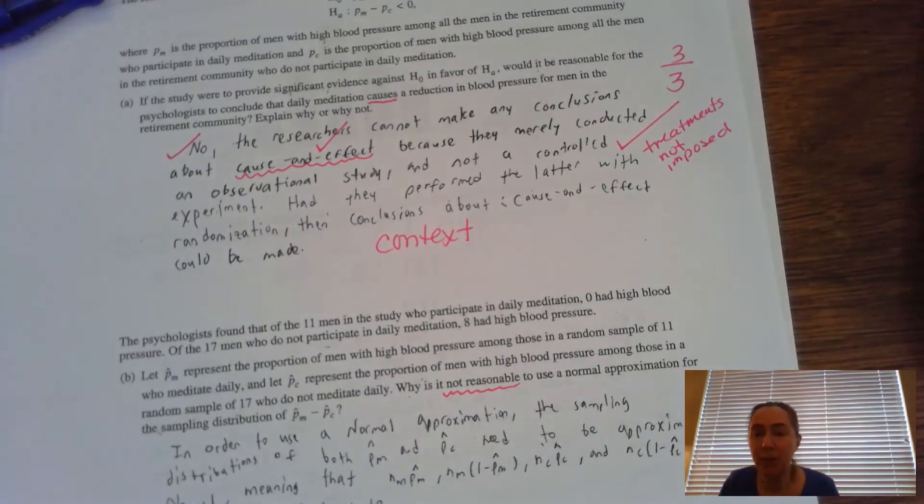Now, remember to use a normal model. You need to make sure that the conditions are met. That is the whole premise here between condition number four, the nearly normal, if you're working with T tests and T intervals, but success-failure is the condition for normality if we're working with proportions.